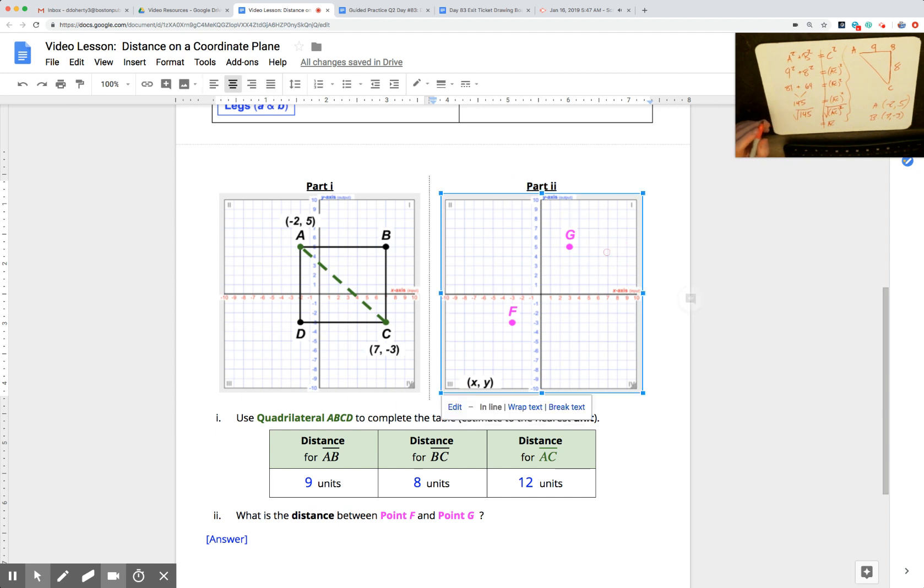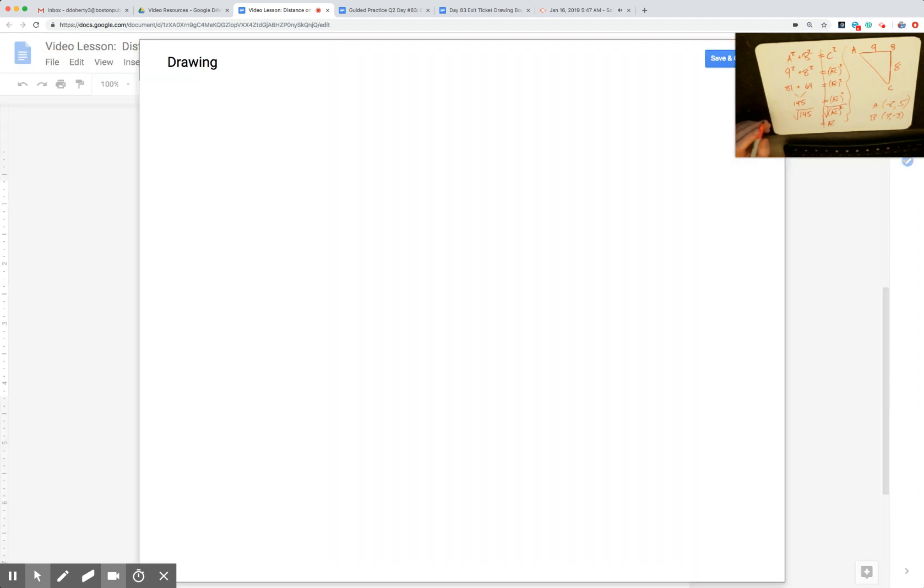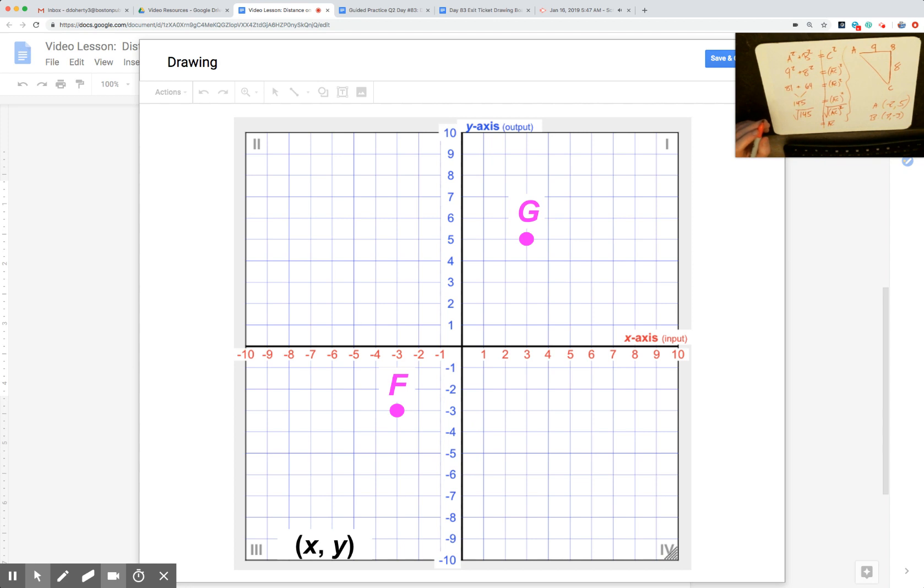I'm going to go ahead and open the drawing, and I'm first going to figure out what are the coordinates for F and G since they didn't provide that. Take a look: what's the coordinates for F? What are the coordinates for G?